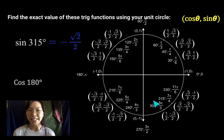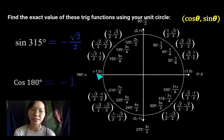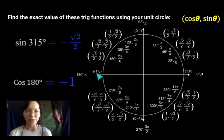Cosine of 180 is the same ordeal. Notice you find the angle 180 right here. And the value, the x value, is negative 1.